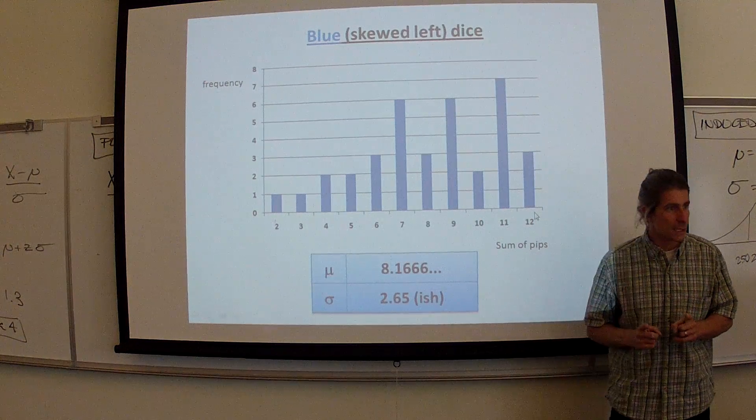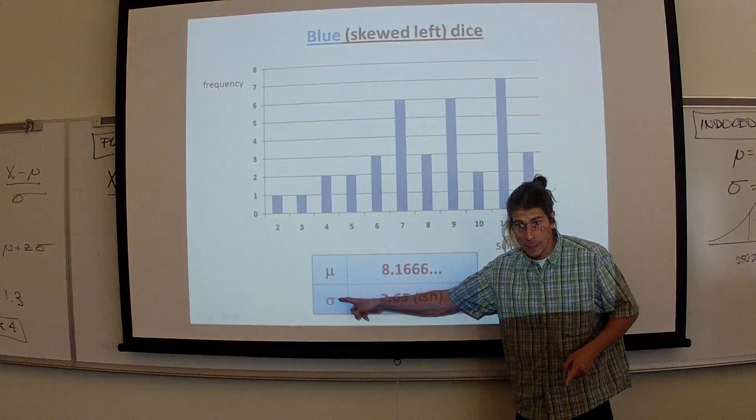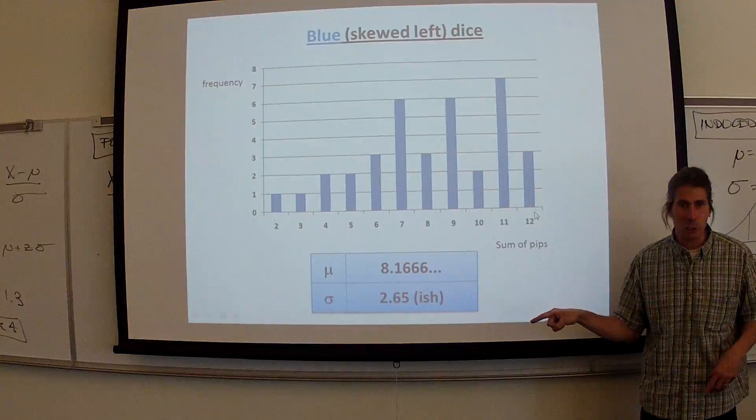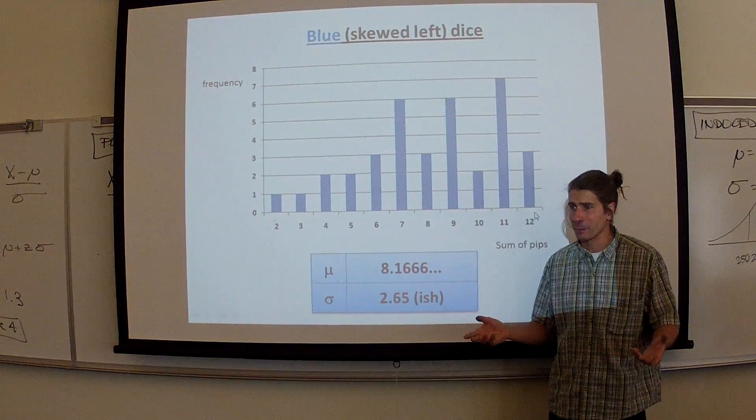And what I want you to think about, too, is we're calling this μ and we're calling this little σ. We are calling it those. But the problem is the only way to call that μ and little σ is to go get the entire population. Now, I know we're talking about something silly, which is little dice that I made in my garage.